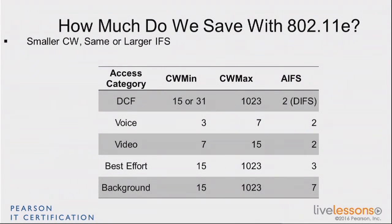For normal DCF — distributed coordination function — which is standard 802.11 without QoS, you have CW min and CW max values. For QoS you have the AIFS value. For voice the CW min is 3, whereas for background it's 15. The CW max is much higher for background than for voice or video. The result is that voice and video always wait less than the other categories, giving them more chances of being sent and received in a congested channel. You don't need to know these numbers by heart for the exam, but it's important to understand the differences between these categories.